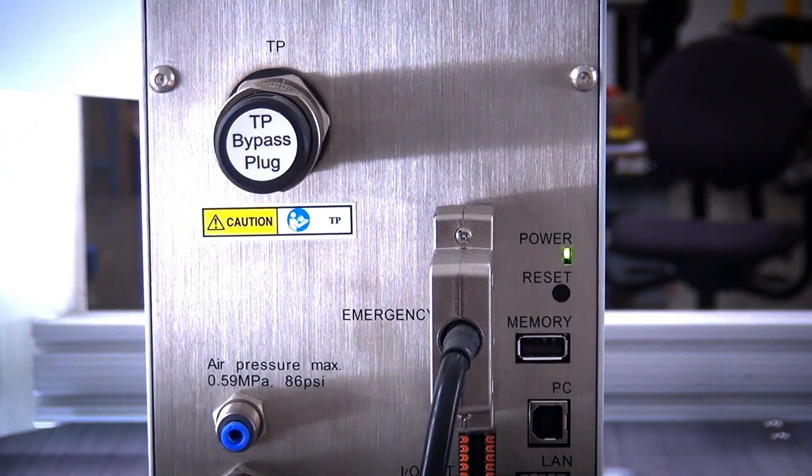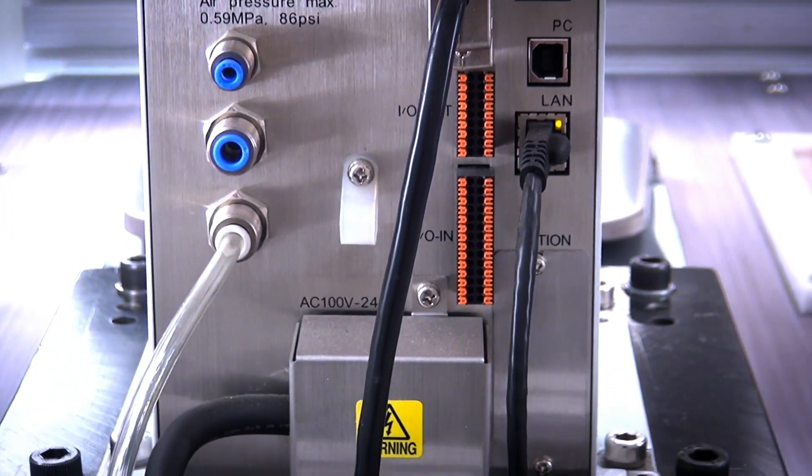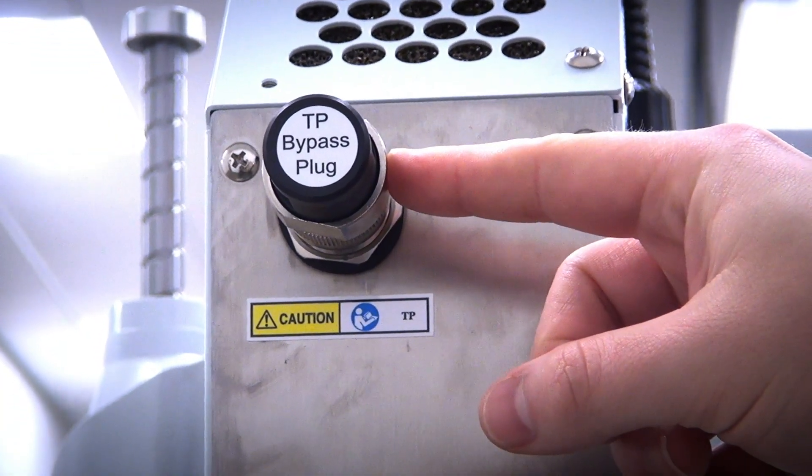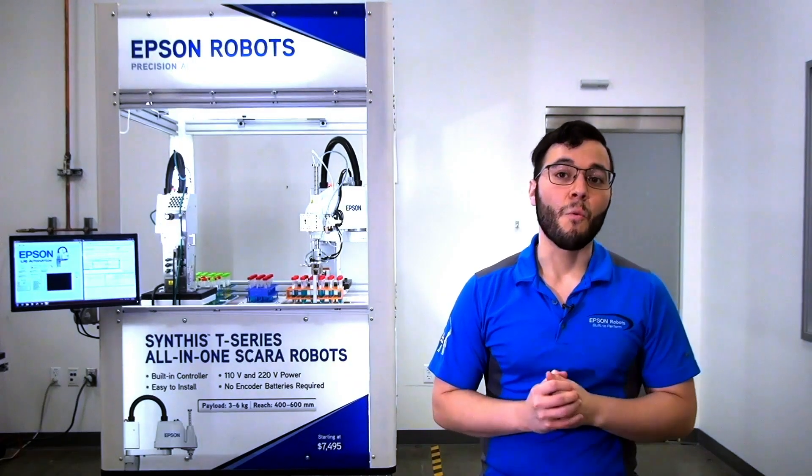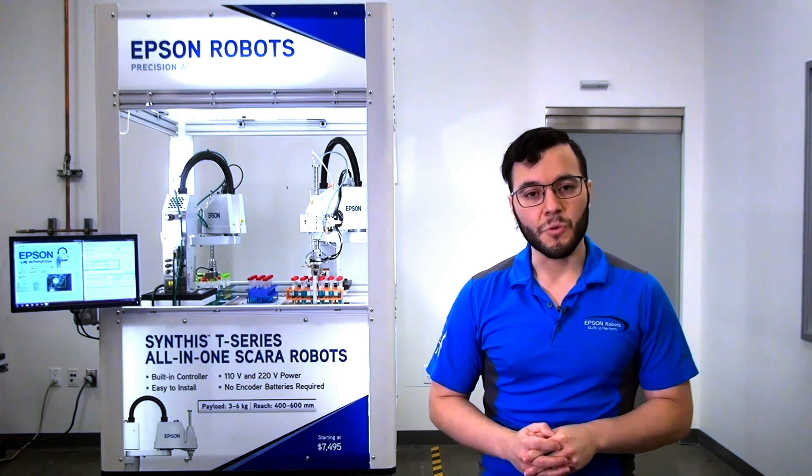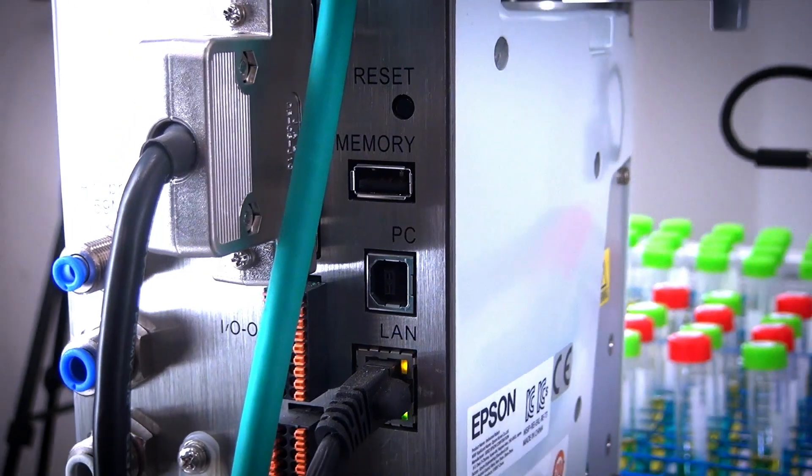The robot controller comes with a variety of connectors on the back, including a teach pendant connector so that you can utilize Epson's teach pendants to program or move your robot. You have an emergency connector for wiring your safety circuit, you have user inputs and outputs for 24 volt signals, you get a total of 18 inputs and 12 outputs, you can wire them for PNP or NPN wiring style.